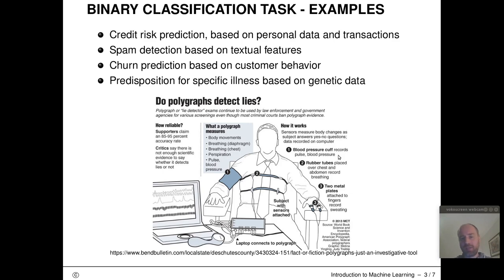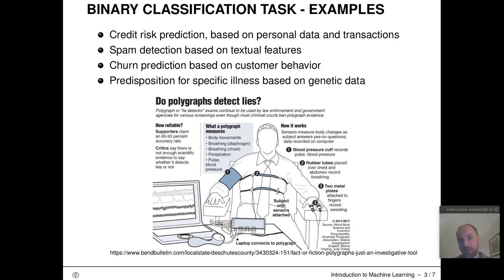Here are a couple of binary classification examples. Credit risk prediction: based on personal data and historical transactions, we create an automatic model that outputs an estimate of the risk for a person to pay their credit back. There's also spam detection: based on textual features of emails, we automatically predict whether an email is spam or not. These systems have been running in the background of email clients and providers for many years.